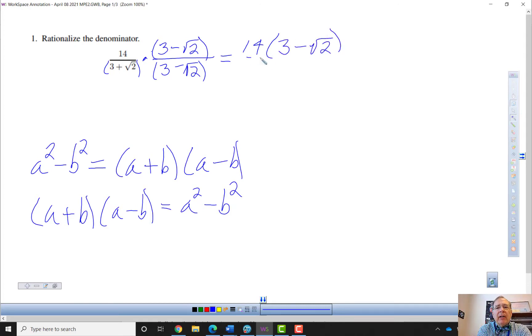So in the numerator, I get this. And then three times three is nine. And then square root of two times negative square root of two is negative two.